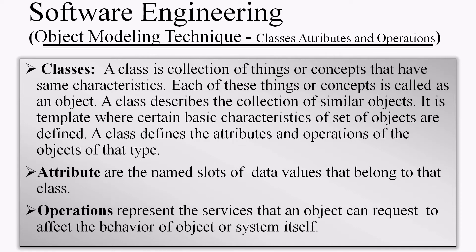First, we will discuss classes and objects. A class is a collection of things or concepts that have the same characteristics; each of these things or concepts is called an object. A class describes the collection of similar objects and is a template where certain basic characteristics of a set of objects are defined. A class defines the attributes and operations of objects of that type. Attributes are the named slots of data values that belong to that class. Operations represent the services that the object can request to affect the behavior of the object or system.